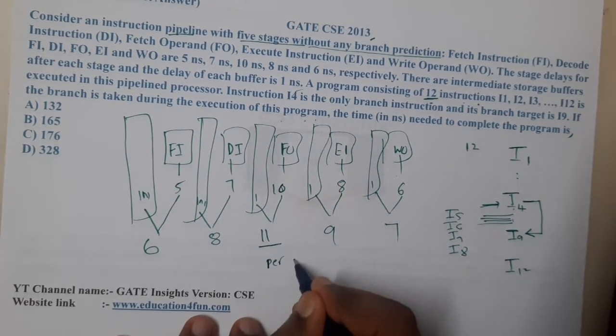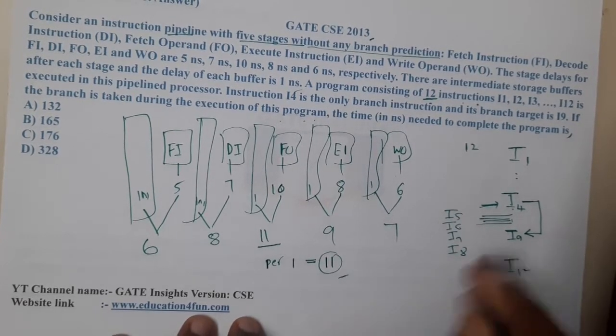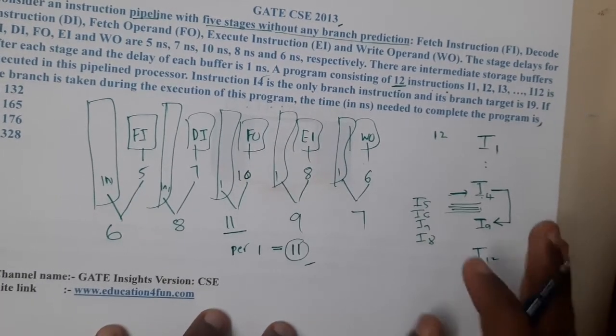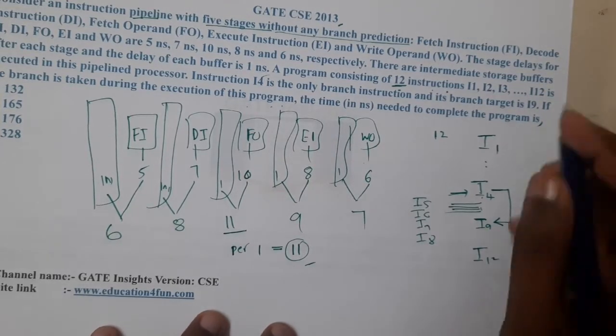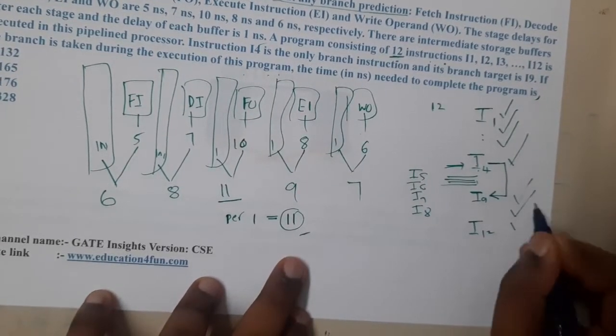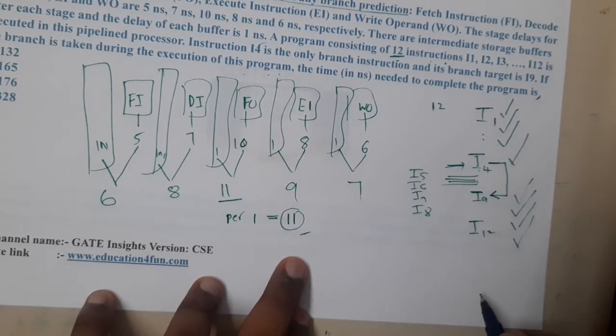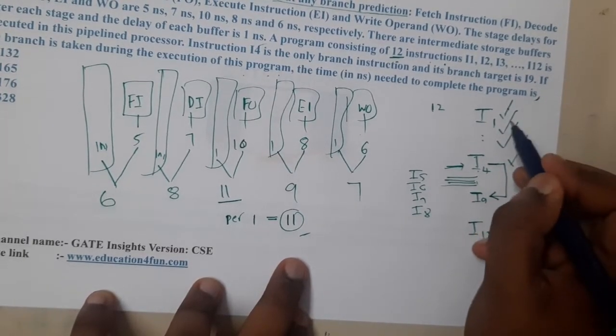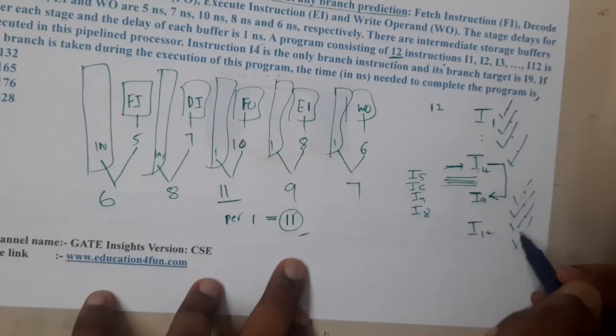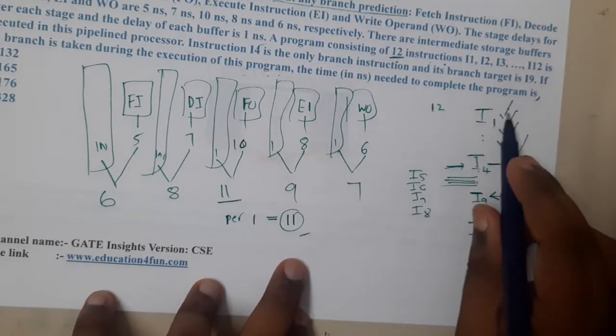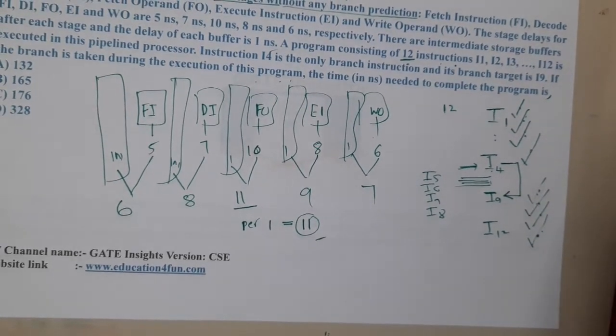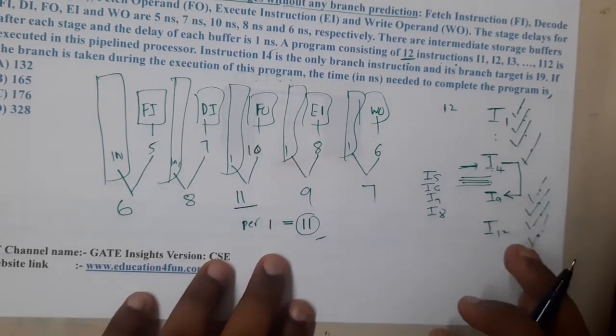If you recall clearly, we know how many instructions are in our list. They clearly told that the jump has been taken, means I1 will be executed, I2, I3, I4, I9, I10, I11, I12 will be executed. So in total how many instructions? Exactly one, two, three, four, five, six, seven, and eight. So mandatorily we are going to execute 8 instructions. These eight are mandatory.